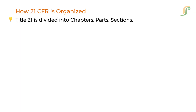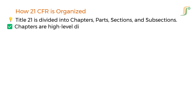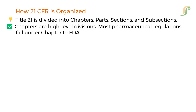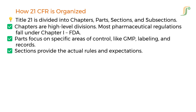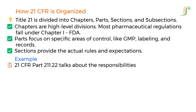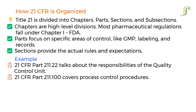Now let us look at how 21 CFR is organized. Title 21 is divided into chapters, parts, sections, and subsections. Chapters are high-level divisions — most pharmaceutical regulations fall under Chapter 1, FDA. Parts focus on specific areas of control, like GMP, labeling, and records. Sections provide the actual rules and expectations. For example, 21 CFR Part 211.22 talks about the responsibilities of the Quality Control Unit, and 21 CFR Part 211.100 covers process control procedures.